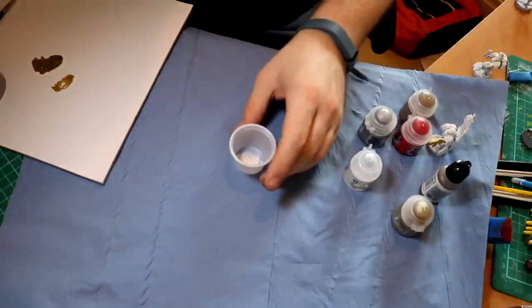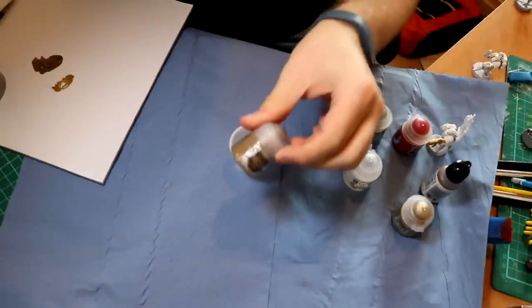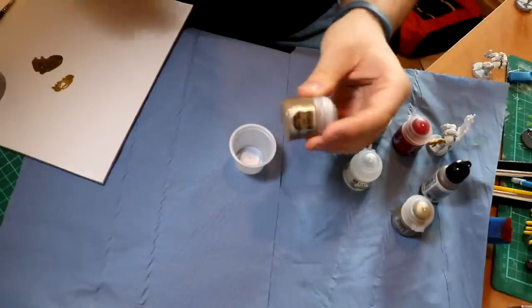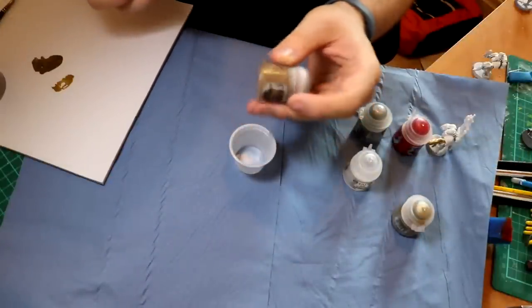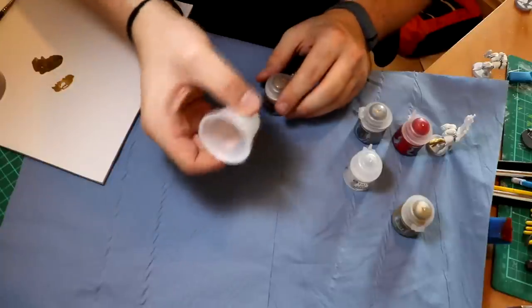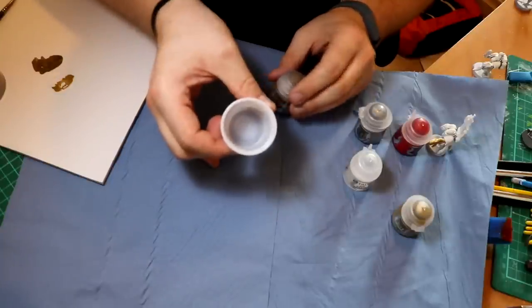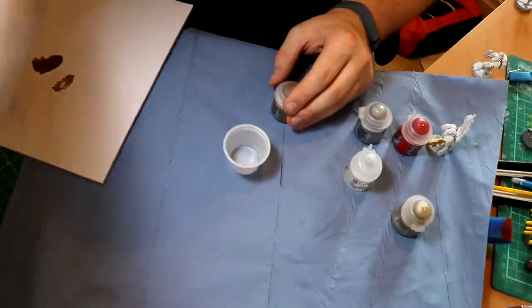The main gripe I've got with GW paints, and this isn't just the Citadel air, is that they come in these bottles which I think is really silly if you're going to be dropping into your airbrush because you're just going to make an absolute mess around the edge. So what I normally do is put this into a cup and then pour the cup into the airbrush.